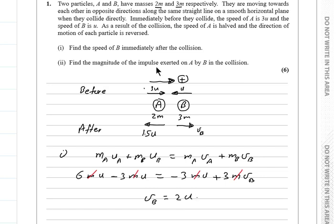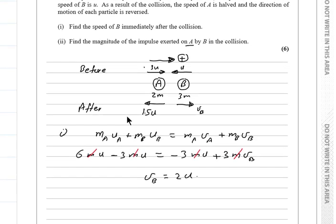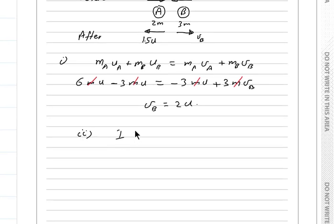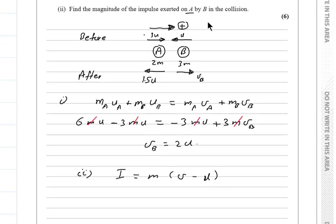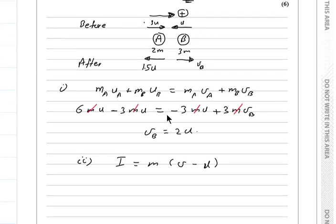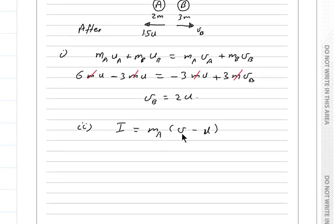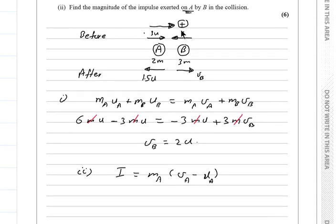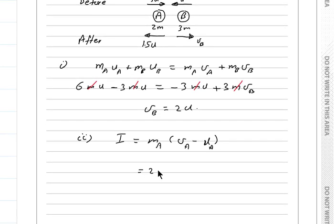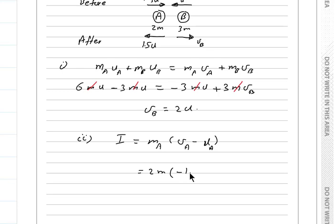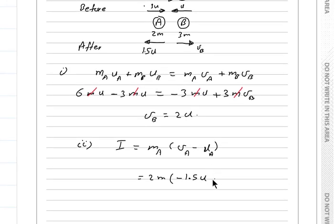Part (ii): Find the magnitude of the impulse exerted on A by B in the collision. You know that the rule of impulse is I = M(V - U), because the impulse is the change of momentum. Now, we are talking about particle A, on A, so we will focus on A. I should write MA, VA, and UA. We should follow the same positive direction which we assumed before. So MA will be 2M, VA will be minus 1.5U, and this is the minus from the rule. Then UA will be 3U.